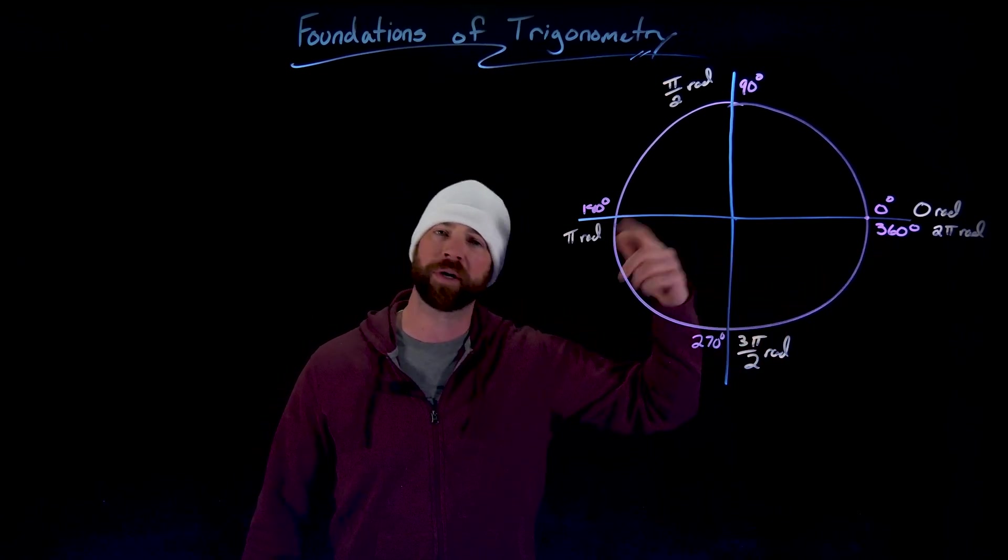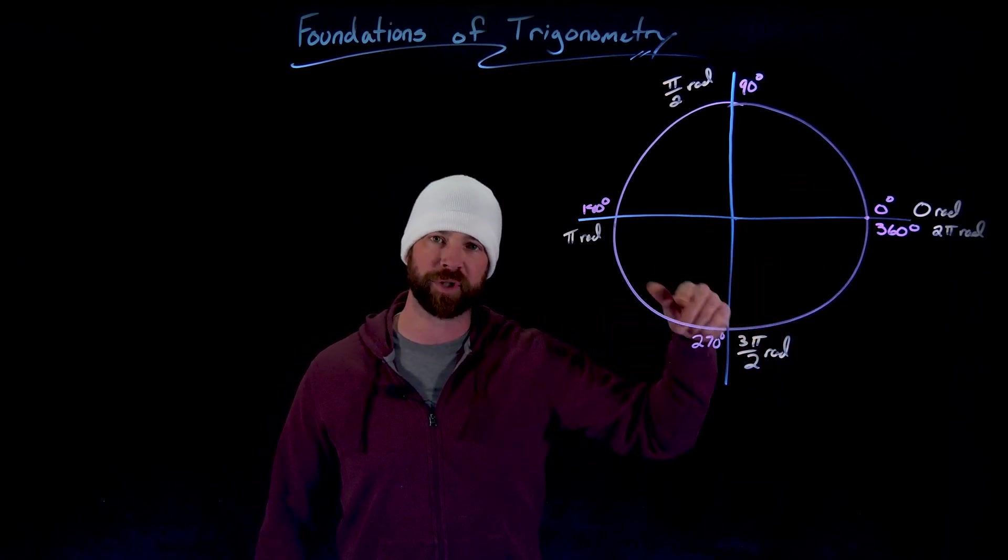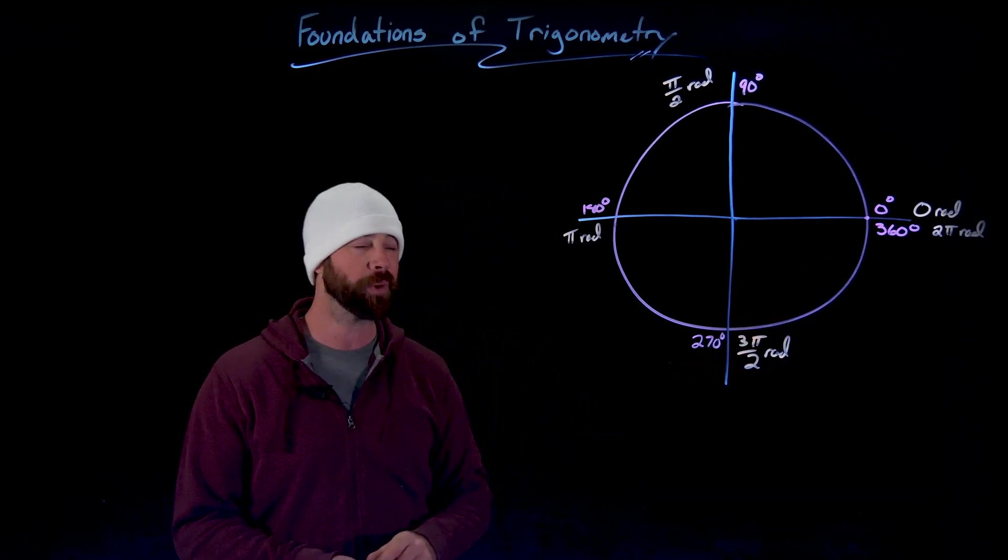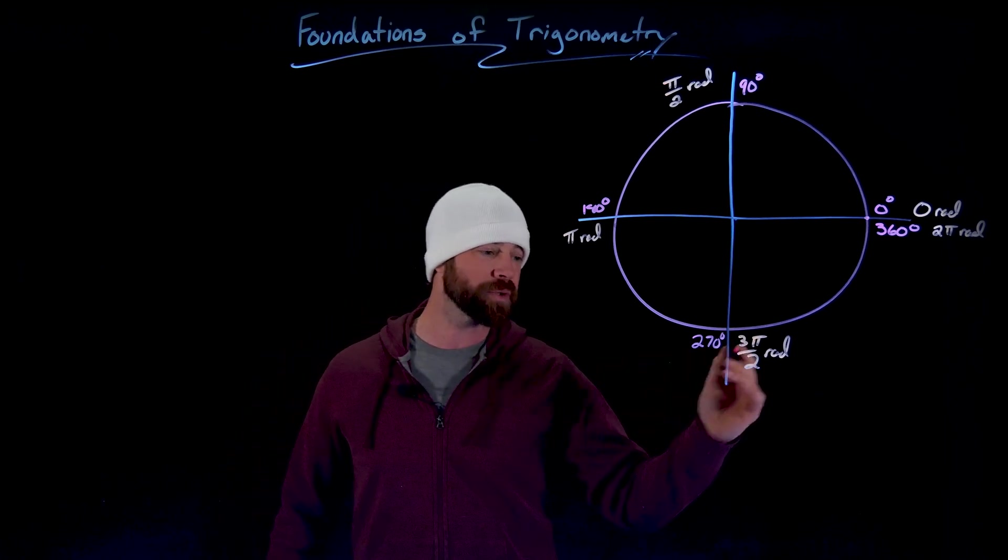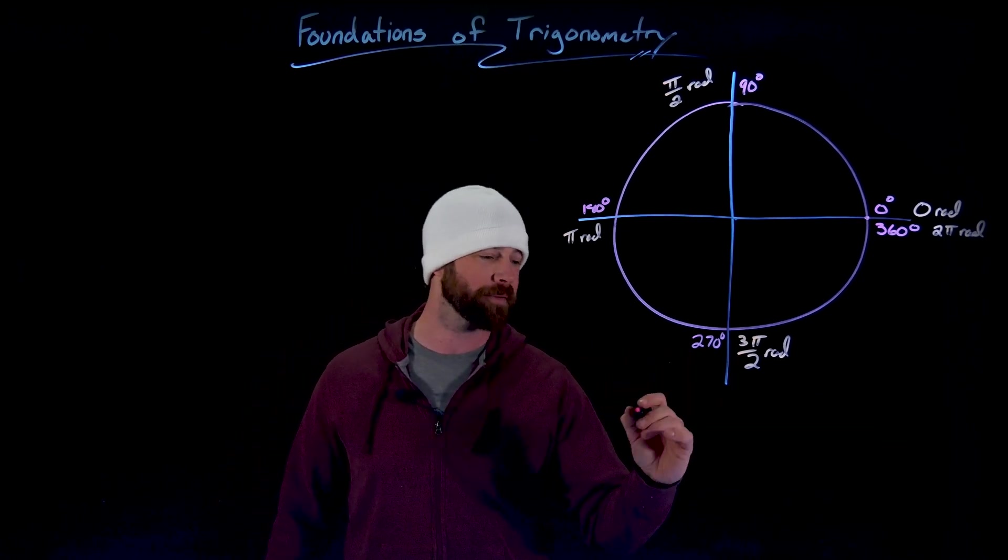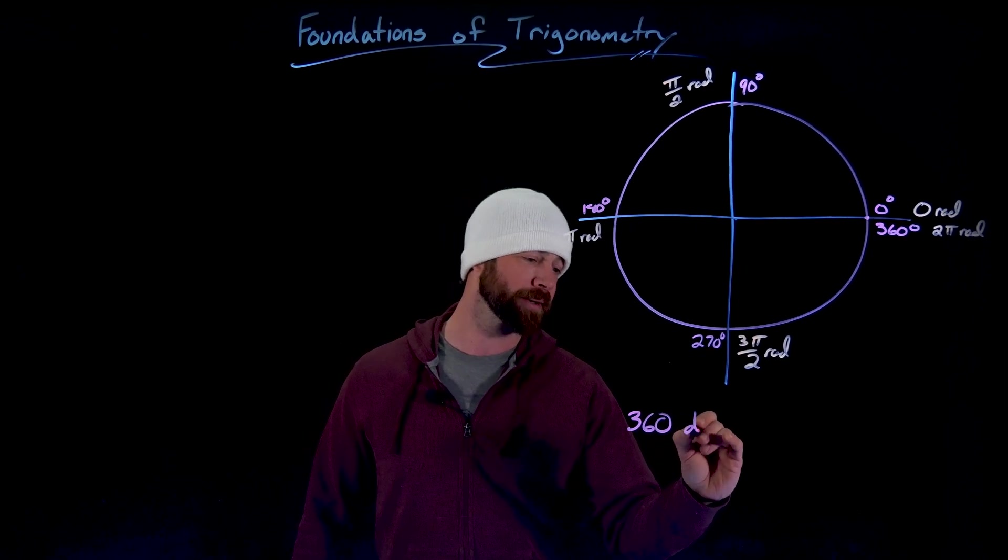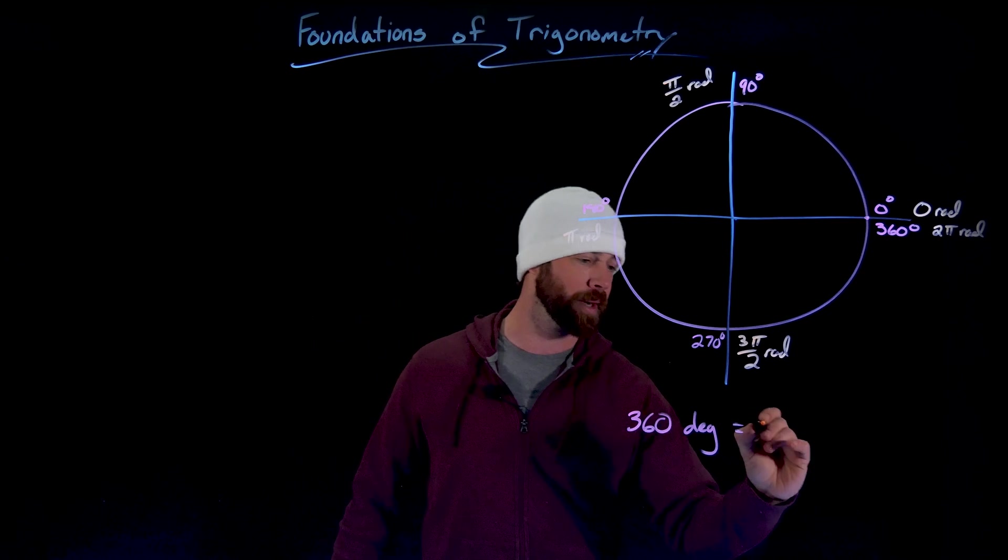What that means is, in terms of degrees, if we want to go twice around the circle, that's 720. If we want to go twice around the circle and describe that in radians, that would be four pi radians. And importantly, whenever we need to do any conversions between these, we can use any kind of conversion method we've done before with this conversion rate that 360 degrees equals two pi radians.